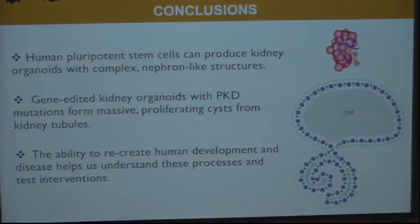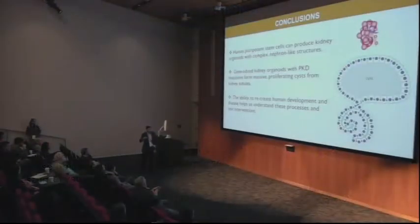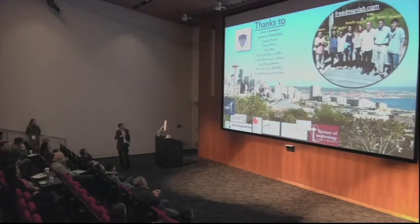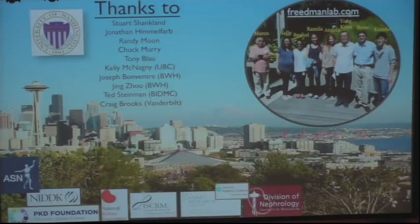To conclude: human pluripotent stem cells can produce kidney organoids with complex nephron-like structures — the first time we've been able to grow these tissues. Gene-edited kidney organoids with mutations in PKD genes form massive proliferating cysts from kidney tubules — also the first time that's been reconstituted in a dish. In the long term, the ability to recreate human developmental processes and disease will help us understand what's happening at the cellular level and how we might intervene to benefit humanity. I want to thank everyone at UW, my laboratory, the funding agencies, and you for your attention.